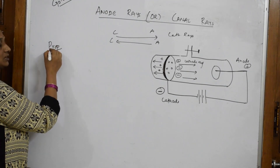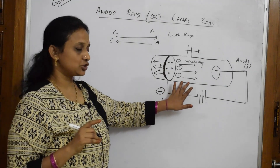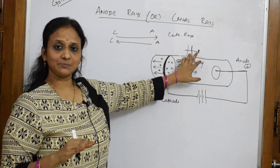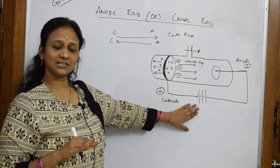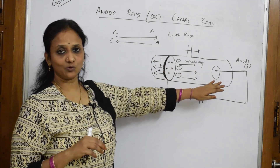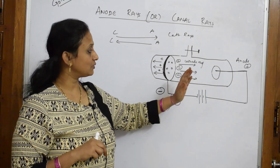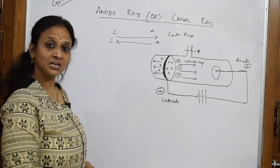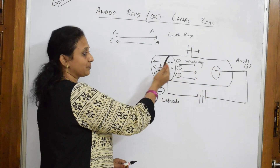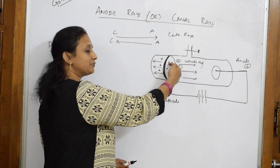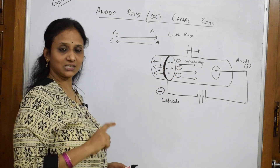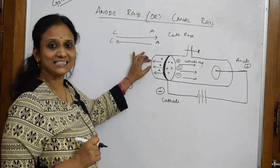Let us discuss the properties. The discharge tube had gas at low pressure, connected to a vacuum pump to maintain pressure, with an external electrical field and two electrodes — cathode and anode. When the gas at low pressure was taken, the anode rays were observed traveling through the perforations of the cathode, coming out and showing scintillation strikes.